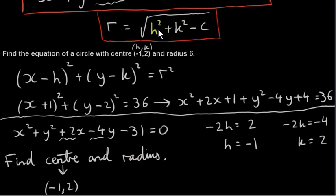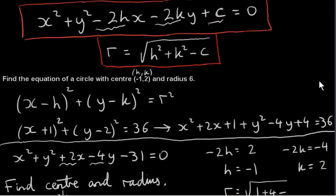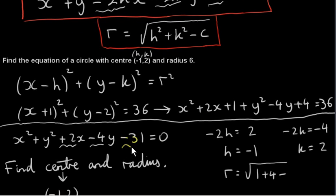Next, how do we get the radius? Well, we use this formula. To get the radius, we have to take the square root of h squared plus k squared minus c. h is minus 1; if we square minus 1 we get plus 1. k squared is 2 squared, which is 4, minus c. Well, c is the term at the end of the equation. For this particular circle, c is minus 31. So our formula gives us minus minus 31, that's plus 31. So we have the square root of 36, which is 6. So r is equal to 6. That's how we work backwards when we're given the equation in this form.